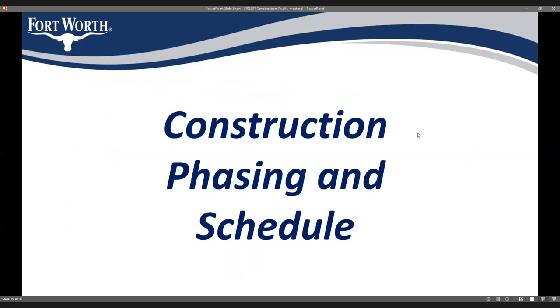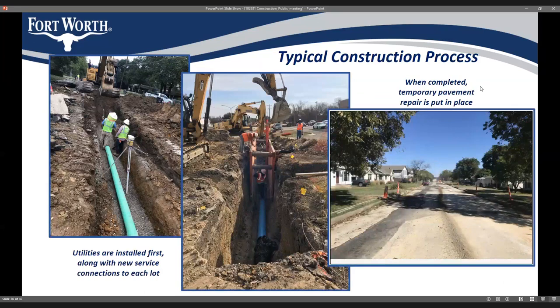Now I'll talk about the construction phasing and anticipated schedule. Utilities will be installed first — water lines on all streets and the sewer line on Uvalde. After they are installed and connected, there will be a temporary paving patch put in place until the street is ready to be paved. You can see in the third picture the asphalt patches that provide a smoother driving surface between utility installation and actual road paving.